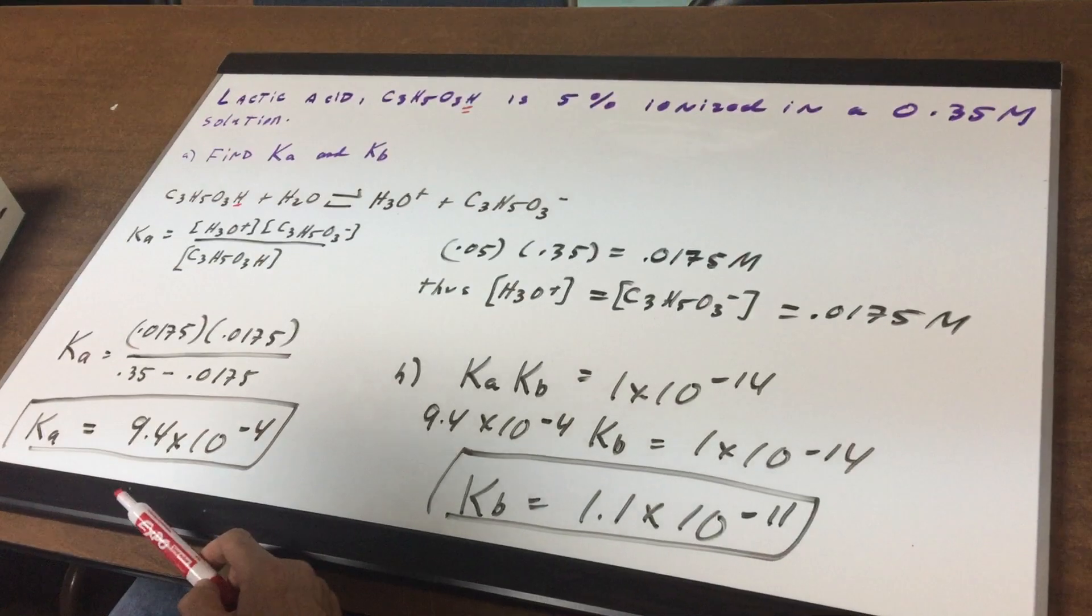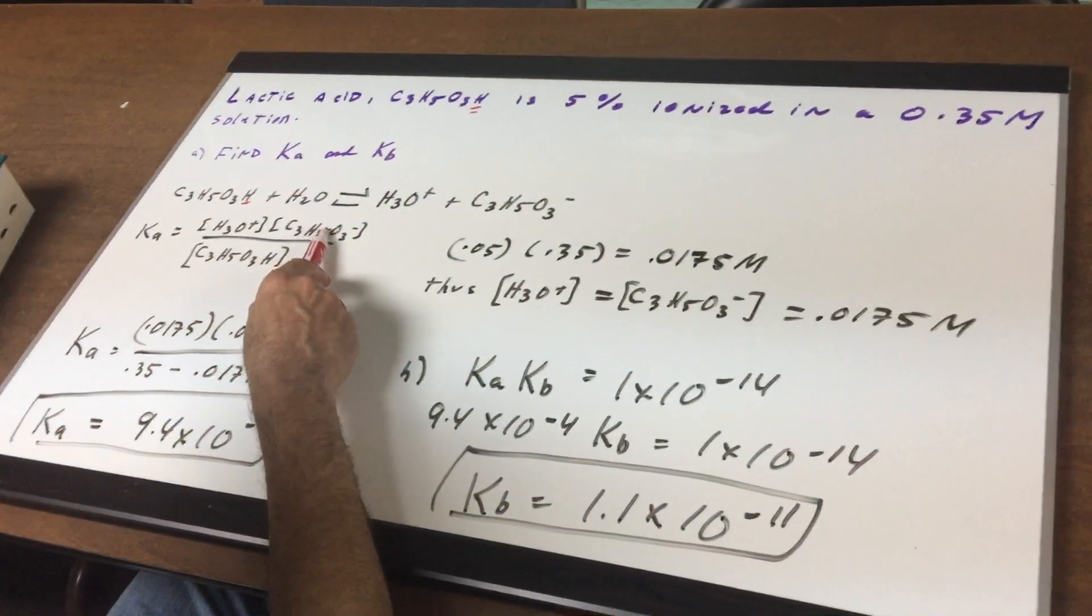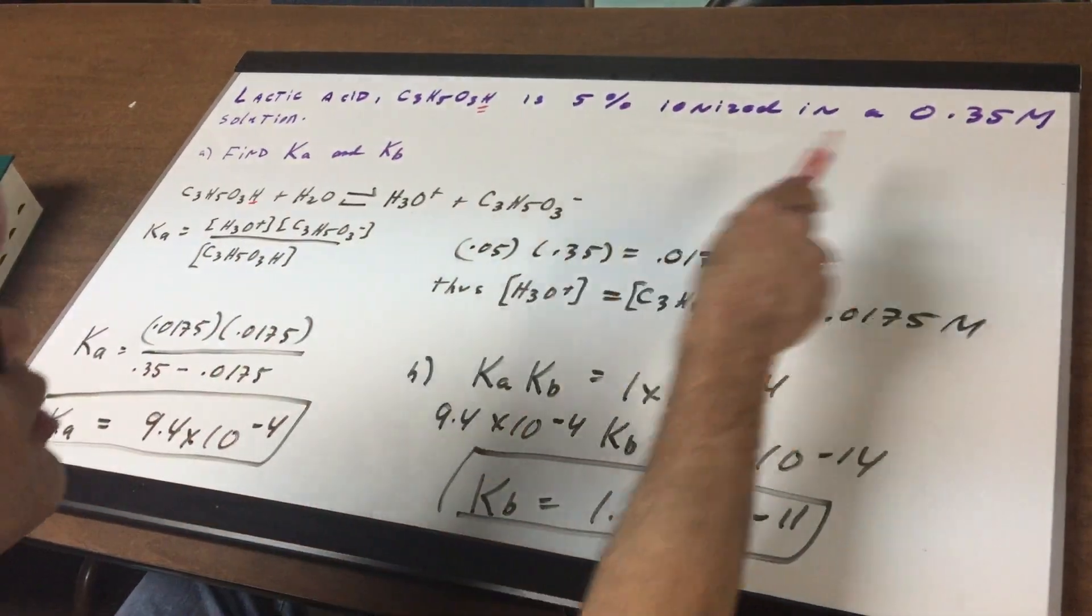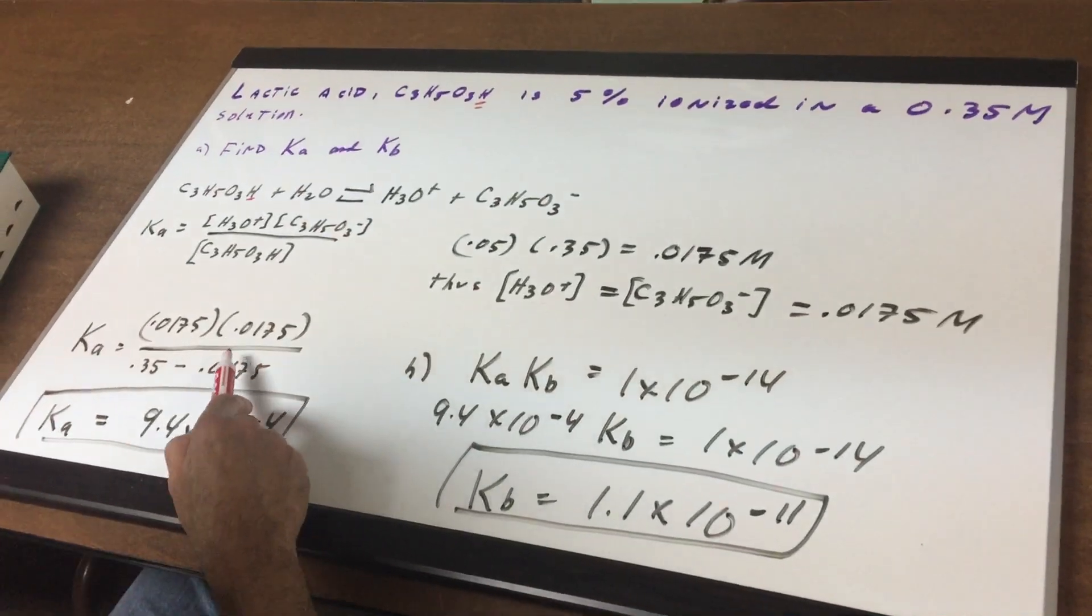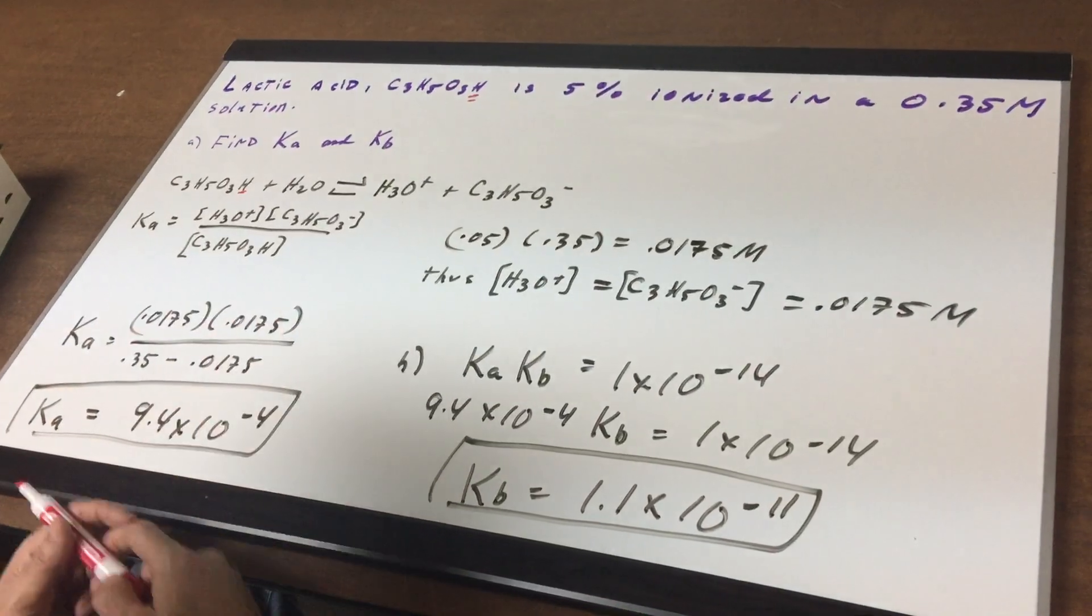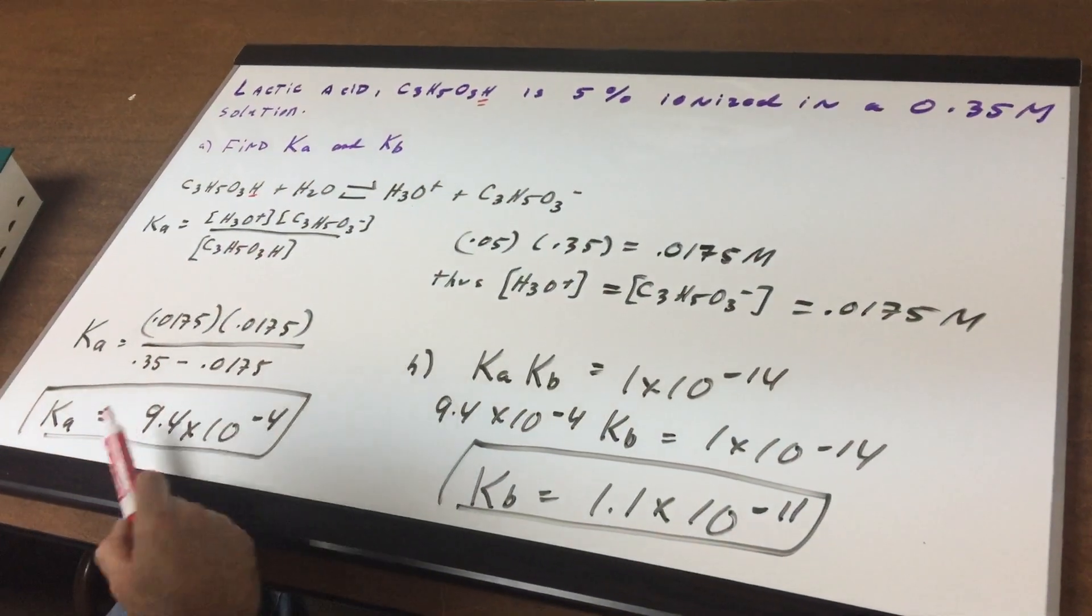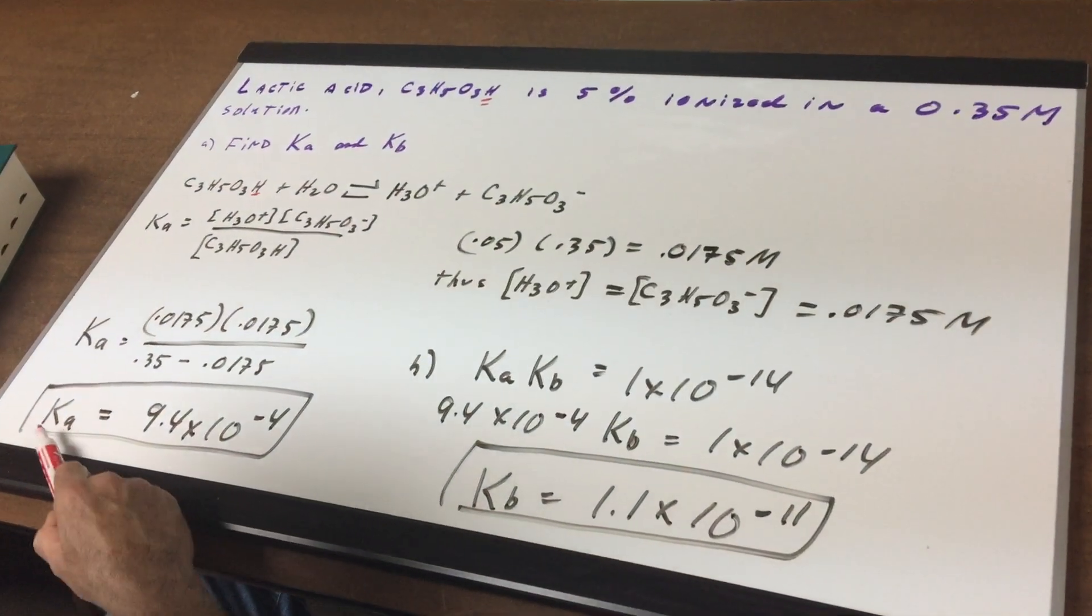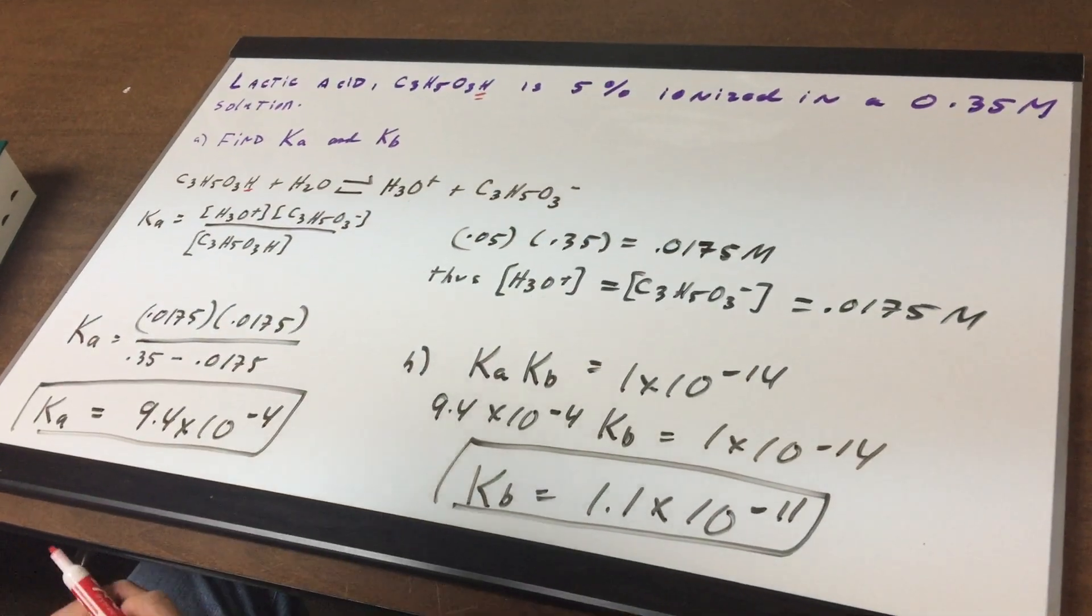Now we put it into the Ka. The Ka is the hydronium times the lactate divided by the total concentration which is 0.35 and we know a little bit broke up. Normally we can omit the small amount that is ionized but I decided to keep this in here because the numbers were pretty easy to work with. When you did it on the calculator you would get around 9.4 times 10 to the minus 4th.